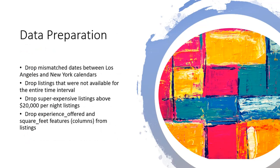So as we prepare the data, we will drop the mismatched dates between Los Angeles and New York. We'll drop listings that were not available for the entire time interval. We're going to drop super expensive listings, about $20,000 per night, because it makes our results not very accurate. And we will drop the columns or the attributes, experience offered, and square foot features.